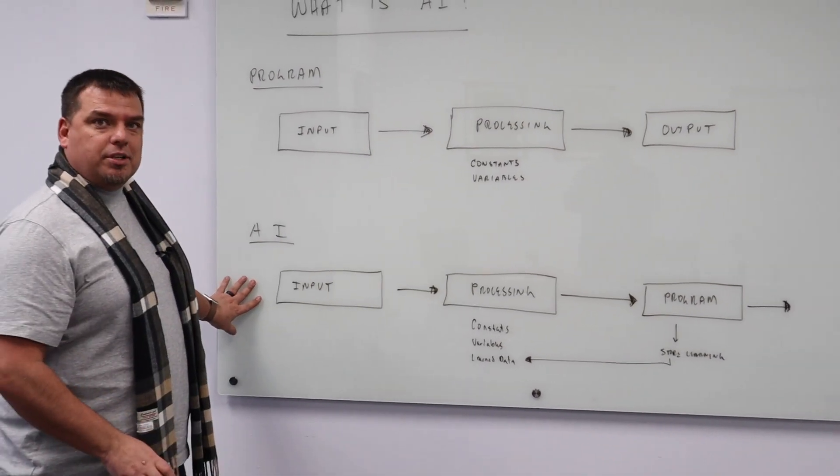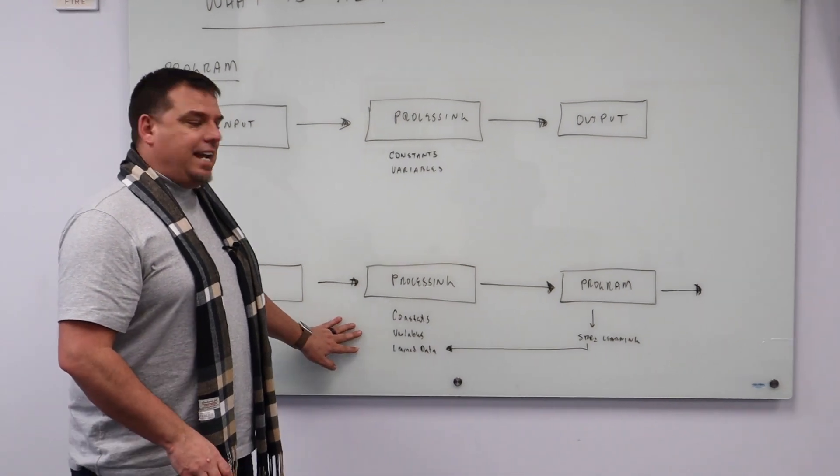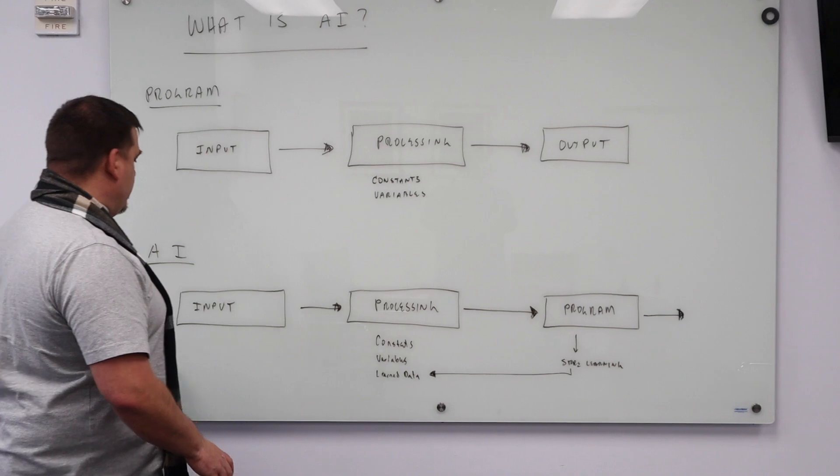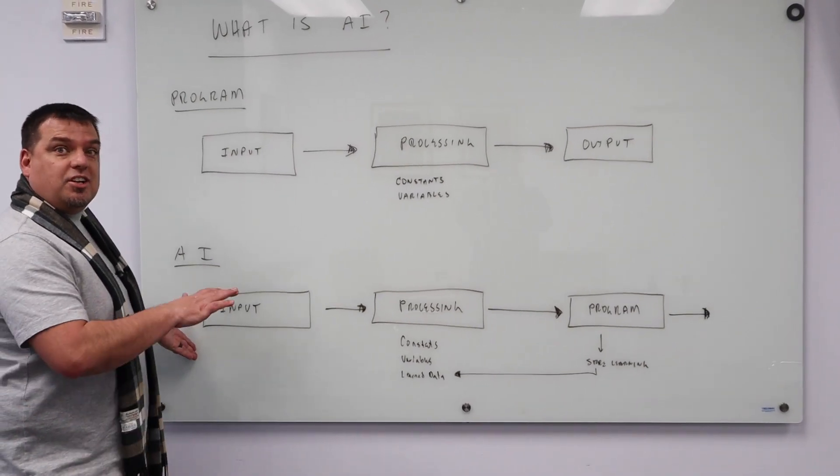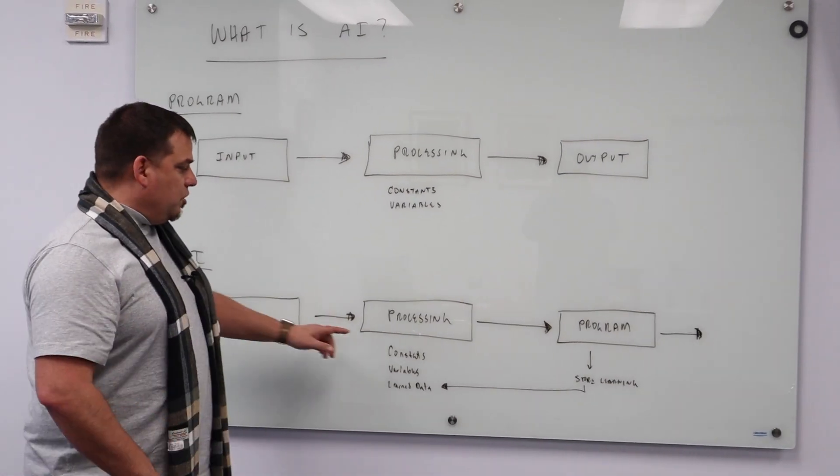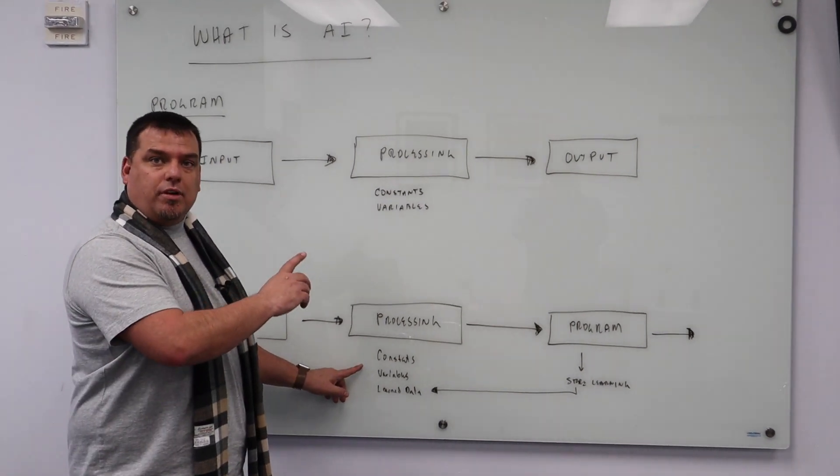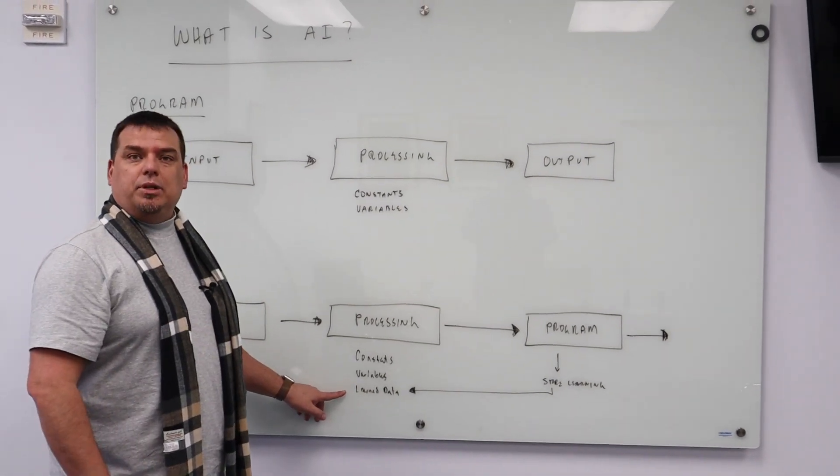Artificial intelligence also has inputs. And it also has processing. And it also has an output, but it always outputs to a program. So we may have an input, which instantiates our machine learning algorithm. During the processing, we look at things like constants and variables, just like with our regular programs, but also we look at information we learned.